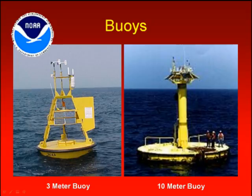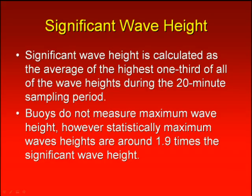Waves are measured by buoys. There are two types of buoys: a 3 meter discus buoy and a 10 meter discus buoy. The buoys measure significant wave heights. Significant wave height is calculated as the average of the highest one-third of all the wave heights during the 20-minute sampling period. Buoys do not measure maximum wave height.